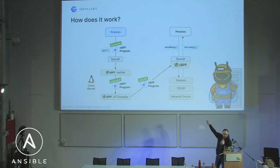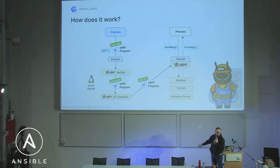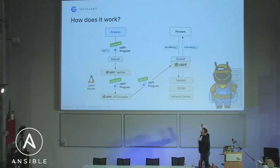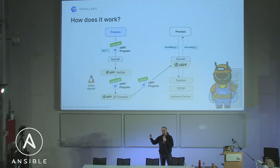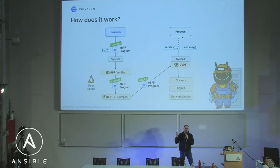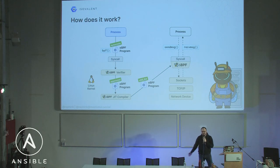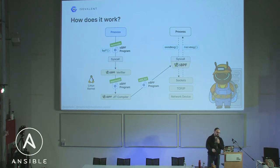When a process in user space starts using syscalls, if you've attached your eBPF program to the send message and receive message syscalls, the eBPF program will be called and can react. It can be to observe, to actually do something with the kernel, to bypass some stacks like IP tables in the case of networking, or to block processes in the case of security.